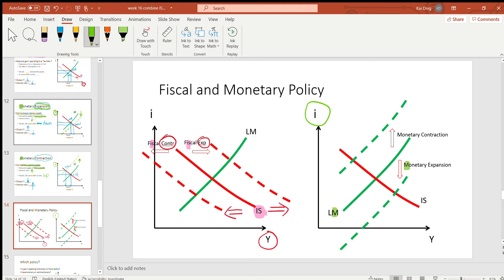When we have monetary expansion, like what the Federal Reserve is using now, they lower the interest, so the LM curve shifts down. Lower interest makes it cheaper for businesses and consumers to borrow money, so that will stimulate economic demand.